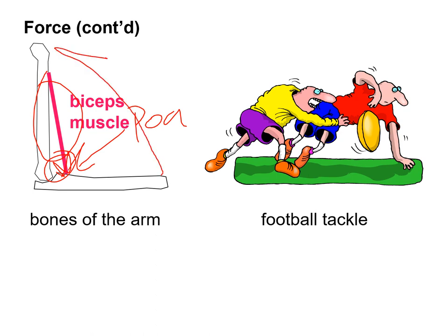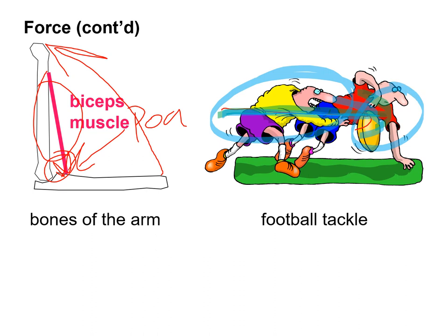The point of application of a force dictates how a system will begin to move. For example, looking at the bicep doing arm flexion in a curl: this vector shows the magnitude, direction, and point of application, and the arm flexes upward. In a football tackle, the person is moving in a given direction — that's our magnitude, direction, and point of application. The muscle shortens toward its center in a concentric contraction, pulling up on the forearm.